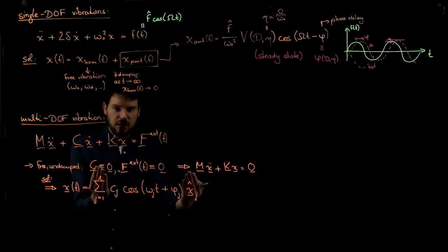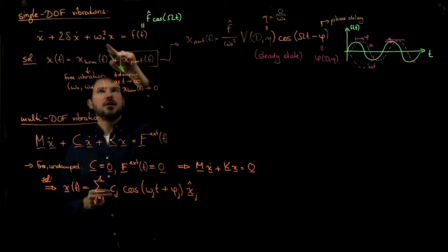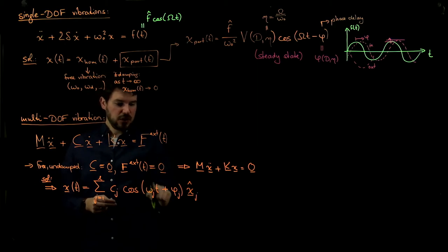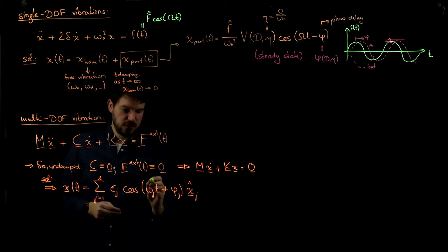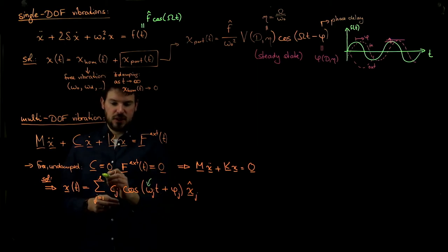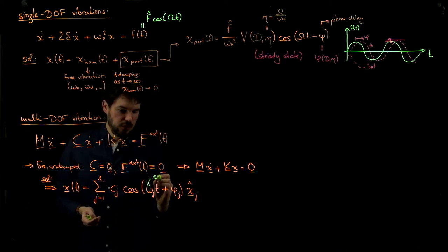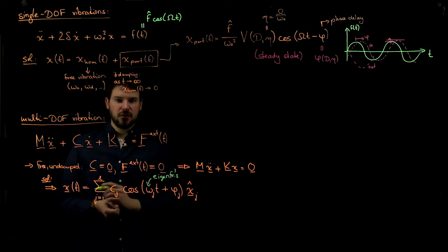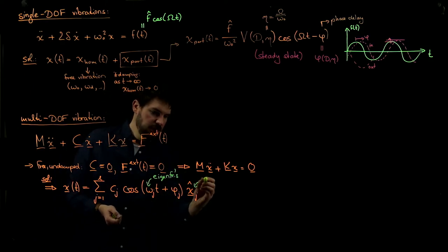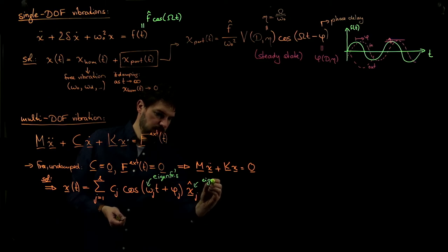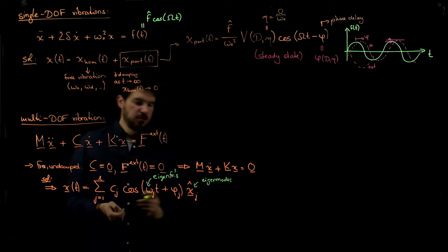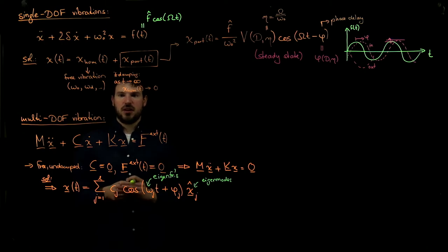Without the sum and without the eigenvector, this would just be a single DOF vibration, where omega was the eigenfrequency. In our case, we have not just one eigenfrequency but many eigenfrequencies — we have L of those. And these x-hat_j are the associated eigenmodes, because to every frequency there corresponds a particular mode in which the system vibrates. Imagine two particles: they could be moving in phase, out of phase, or doing all kinds of things in 2D — these are the mode shapes of the system.